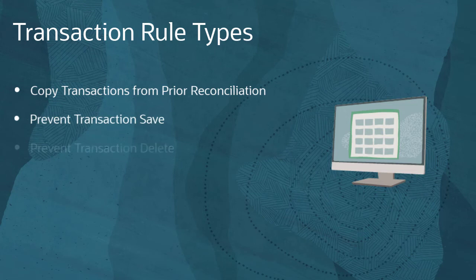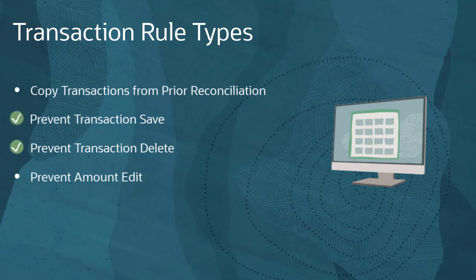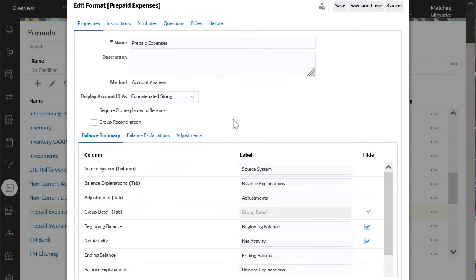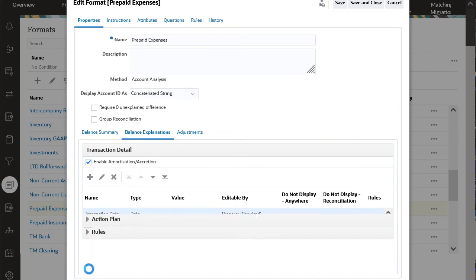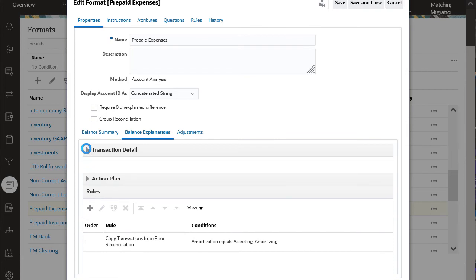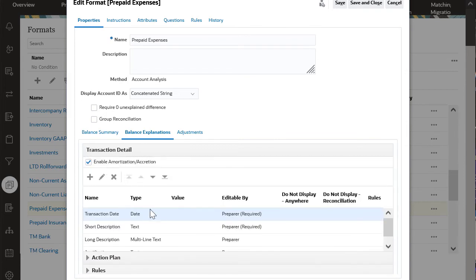Prevent rules prevent users from performing an action when the specified conditions are met. You can prevent transactions from being saved or deleted, and amounts from being edited. Require transaction attachment rules prevent a preparer from saving a transaction unless a file has been attached to the transaction. Set attribute access rules set the access to an attribute for user roles. You create transaction rules in the Rules section of the Transactions tab, except for the Set Attribute Access rule type. To create Set Attribute Access rules, access the Rules tab for the attribute.